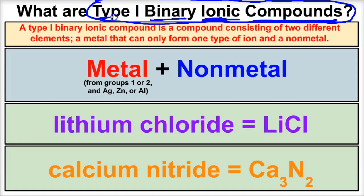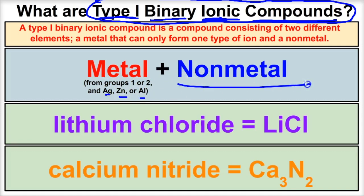The fact that it's type 1 means that the metal comes from either groups 1 or 2, or is either silver, zinc, or aluminum. So anytime you have a metal that comes from groups 1 or 2, or is either silver, zinc, or aluminum, and it's bonded to a non-metal, this is going to be a type 1 binary ionic compound.